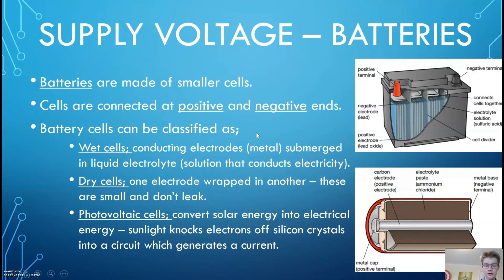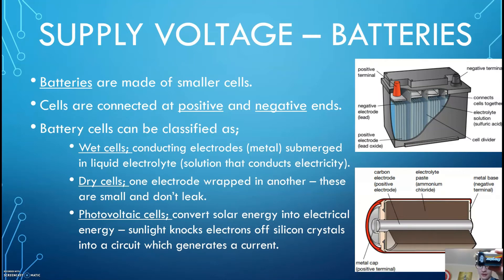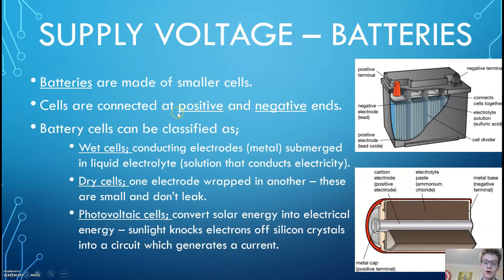Batteries as a power supply — there are three main types of batteries. We've got wet cells, which have a bunch of conductors submerged in a liquid electrode that is also a conductor, like car batteries. We've also got dry cells, which are like your typical battery — just one electrode wrapped in another. And then we've got photovoltaic cells, or solar cells, which are cells that can convert solar energy into electrical energy. The main thing to remember with batteries is they always have a positive end and a negative end, and the current is already set to flow one way and won't flow any other way.